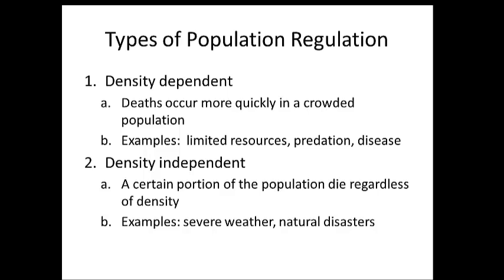Population growth is maintained by a set of limiting factors. All organisms need water, food, space, and shelter to survive, and competition for these limits how much they're able to grow. Outside influences like weather, predators, disease, and invasive species also play a role. Eventually we end up with a logistic growth curve, where the population evens out at a carrying capacity.